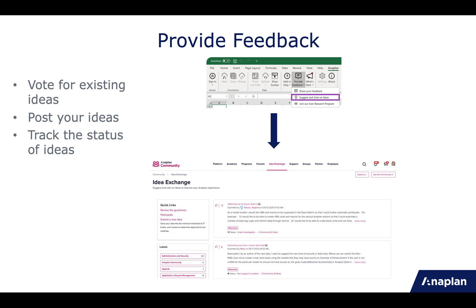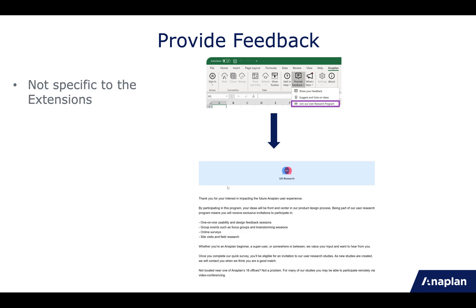The next item opens the idea exchange, where you can browse existing ideas and vote for them, or post your own idea. You can even track the status of ideas to see if your idea is on the roadmap and when it has been delivered. Use the label 'extensions' to facilitate search. The final item is our user research program — a global Anaplan program covering all products. You don't need a community account to join, and you can participate in usability testing, focus groups, and surveys by filling in the questionnaire.